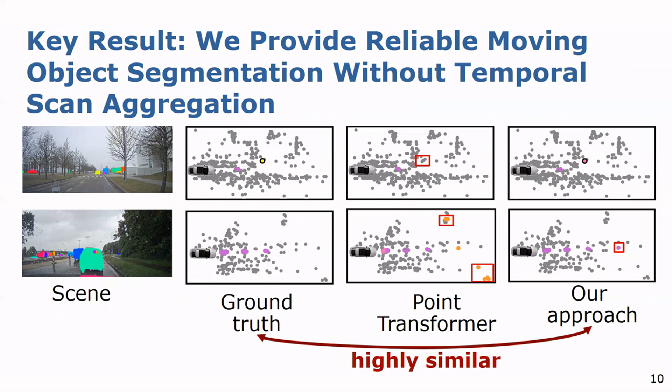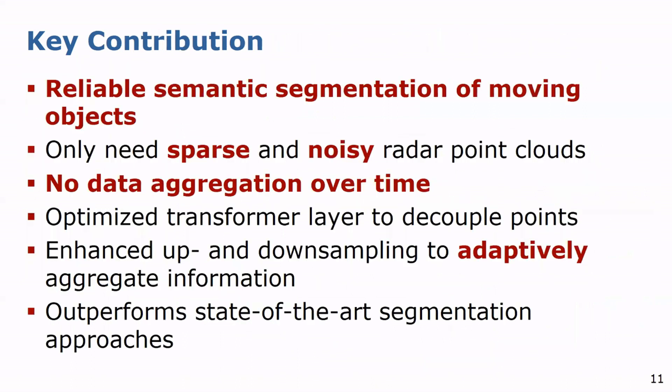The design decisions of our network are backed up with the ablation studies in our paper. To summarize, our method reliably segments moving objects in sparse and noisy radar point clouds. We only need single scan input data and do not rely on any data aggregation over time. Our optimized transformer layer decouples points to precisely extract features. Our enhanced up and down sampling adaptively aggregates information to enhance performance. We outperform state-of-the-art segmentation approaches.